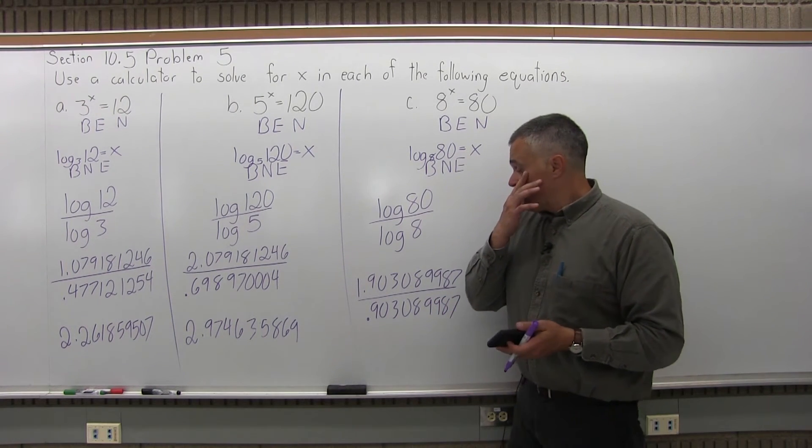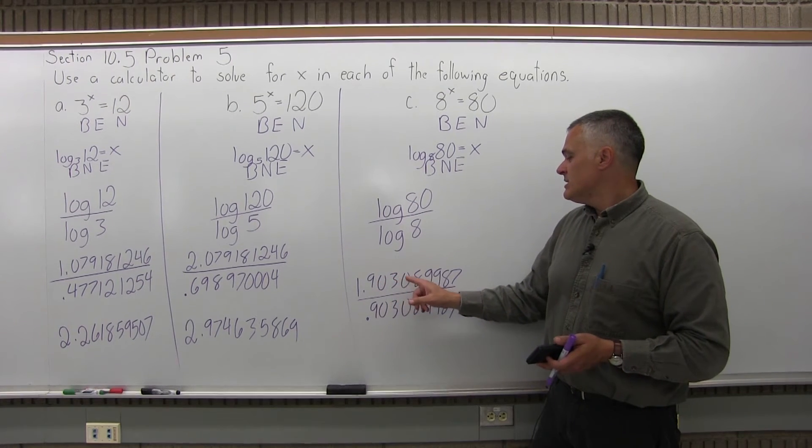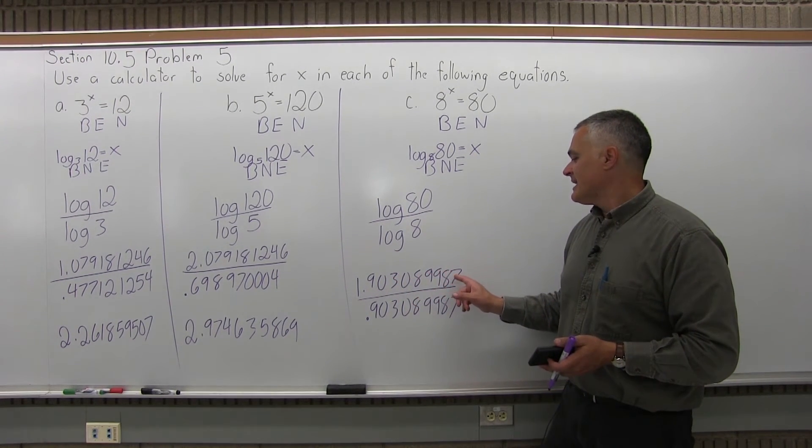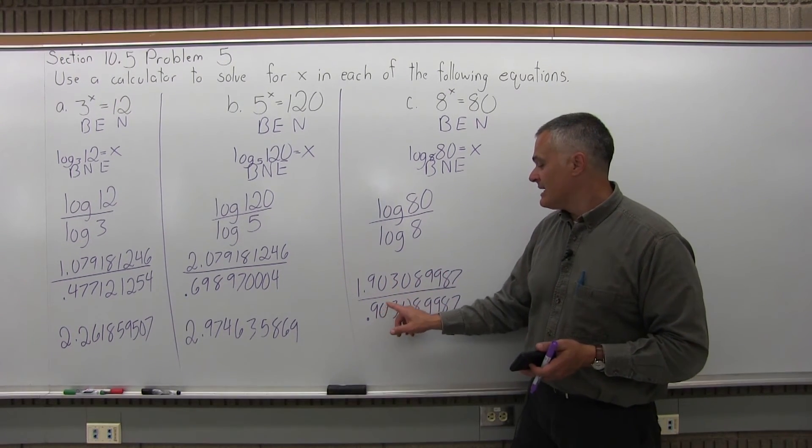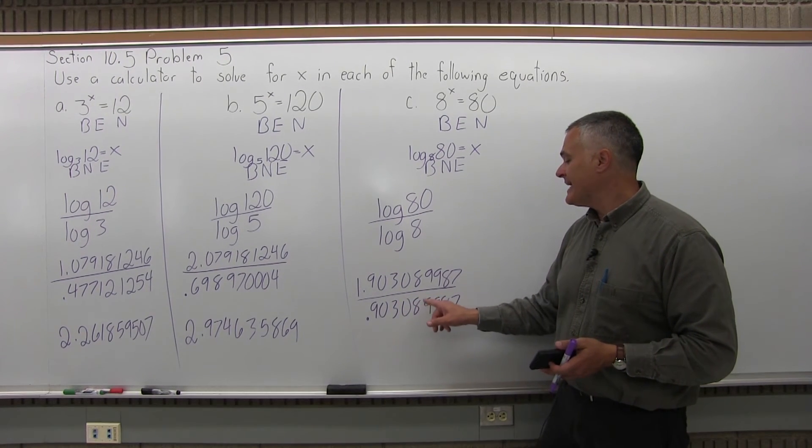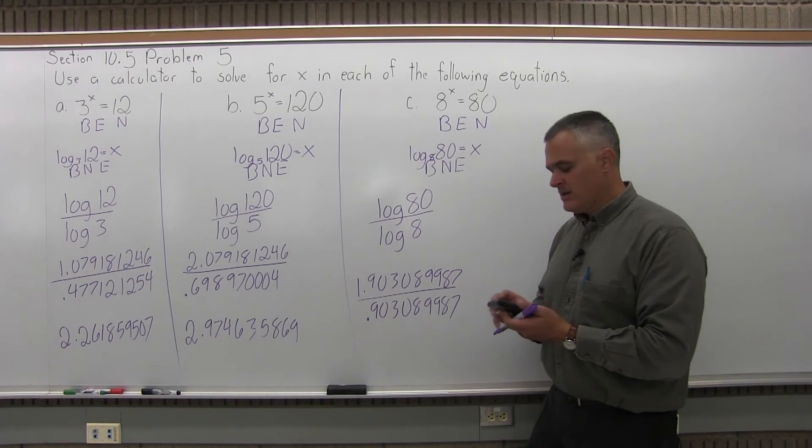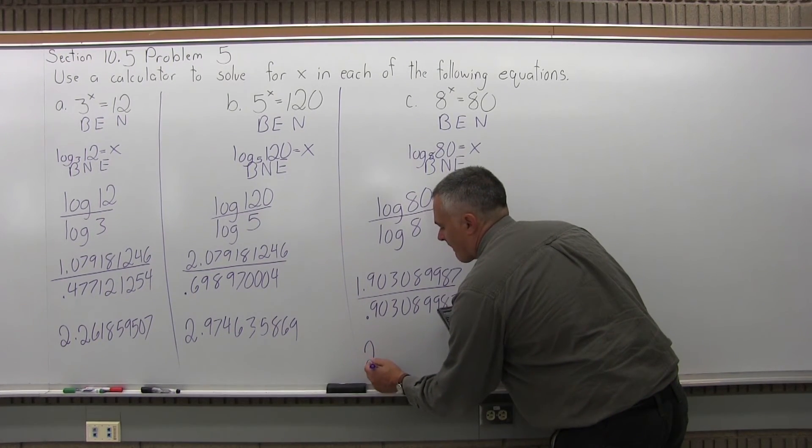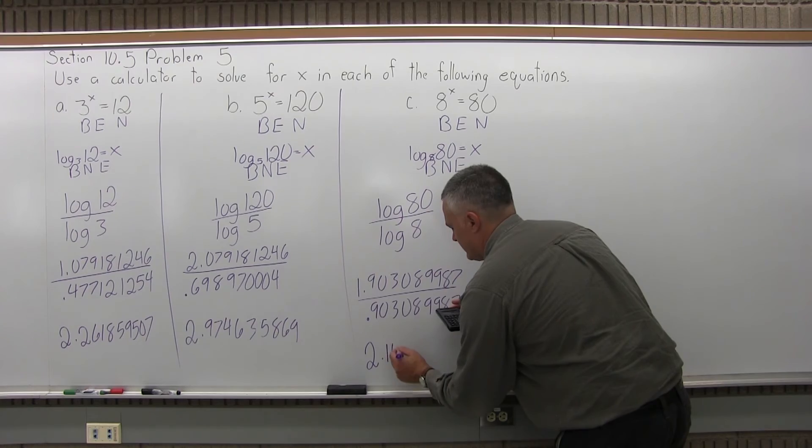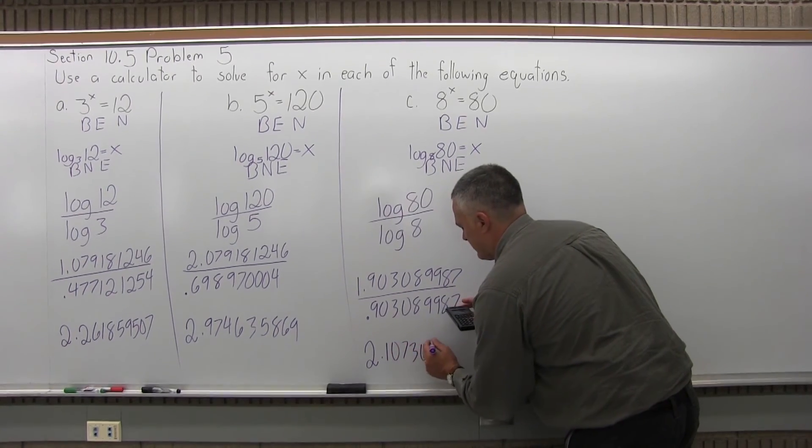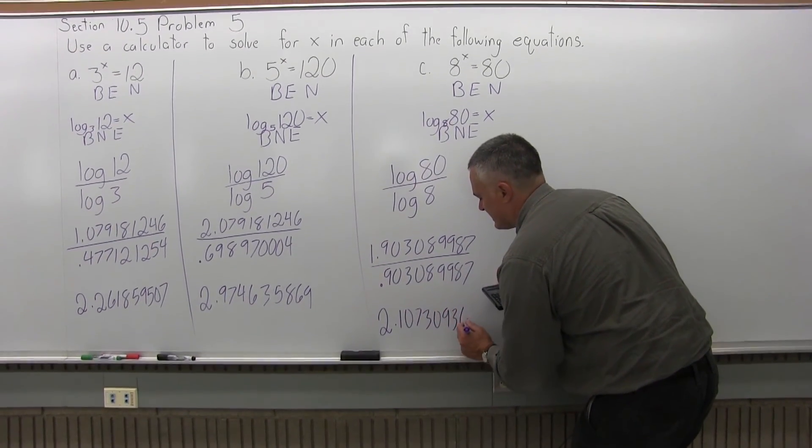So now I have to do the division. 1.903089987 divided by 0.903089987, which is calculated as very easily. And the answer I get is 2.107309365.